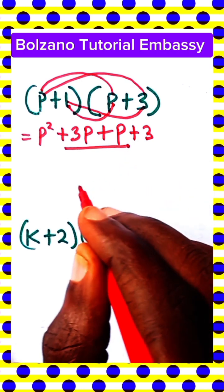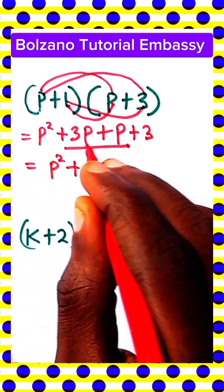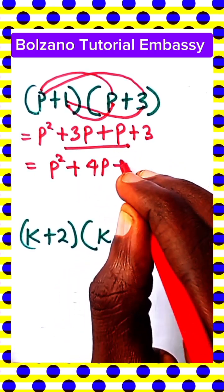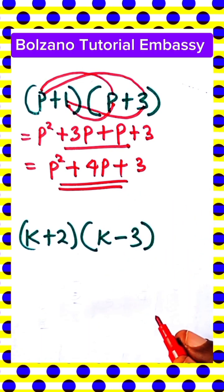Now these two terms can be added, that equals P squared plus 3P plus P is equal to 4P, then plus 3 and that's a solution to that expansion.